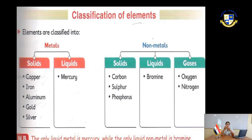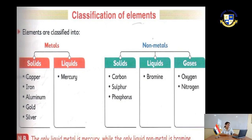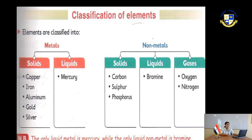Non-metals have three states of matter: solid, liquid, and gas. Solid non-metals include carbon, sulfur, and phosphorus. The only liquid non-metal is bromine. Gaseous non-metals include oxygen and nitrogen.